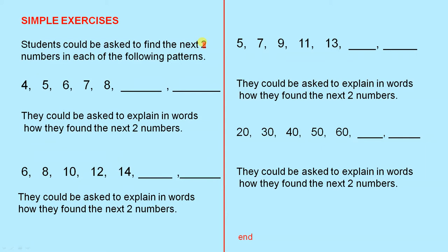Now here are some simple exercises following on from what we just did. Students could be asked to find the next two numbers in each of the following patterns. So here's the pattern, they write the two numbers. Then they could be asked to explain in words how they found the next two numbers. So as well as writing them down, it's a great exercise to get them to explain to you how they found the answer. And it's exactly the same with the next three patterns. So they write the two terms and then they explain how they found the next two numbers.